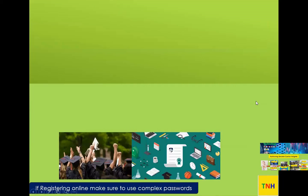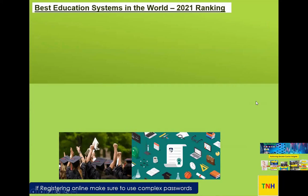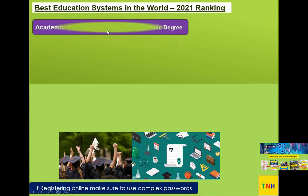Up next is going to be the education system in the world. Now we are coming to education — academic career, undergraduate, and so on. The background is now done: we know brain architecture, learning styles, and competency building. Now it is time to get into the next level — academic career, industrial career, and professional career. We have to go through those three stages.